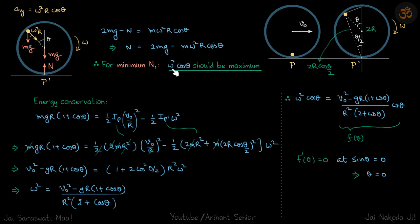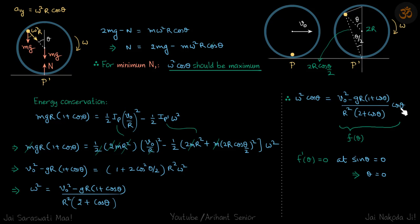We cannot say definitively when ω²·cosθ is maximum, because when cosθ is maximum, omega is minimum. So let's express ω² in terms of theta using energy conservation: mgr(1 + cosθ) = initial kinetic energy minus final kinetic energy. Solving gives ω² as a function of theta, and substituting gives the normal reaction entirely in terms of theta.